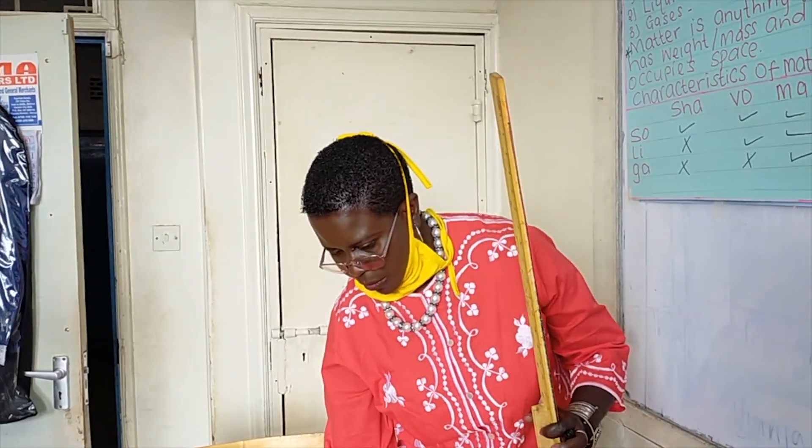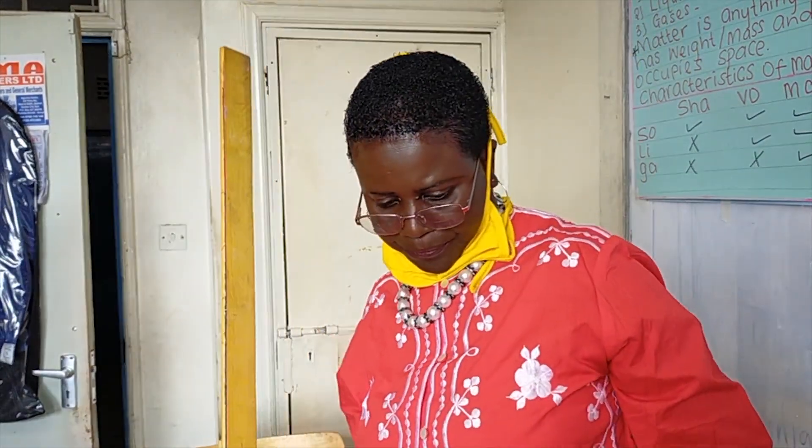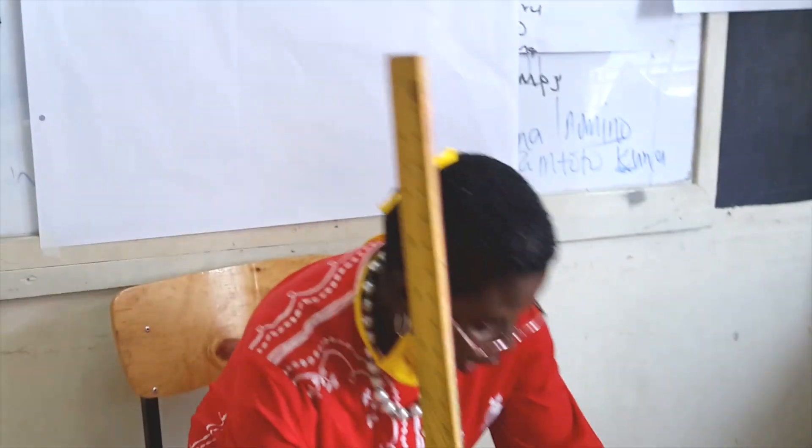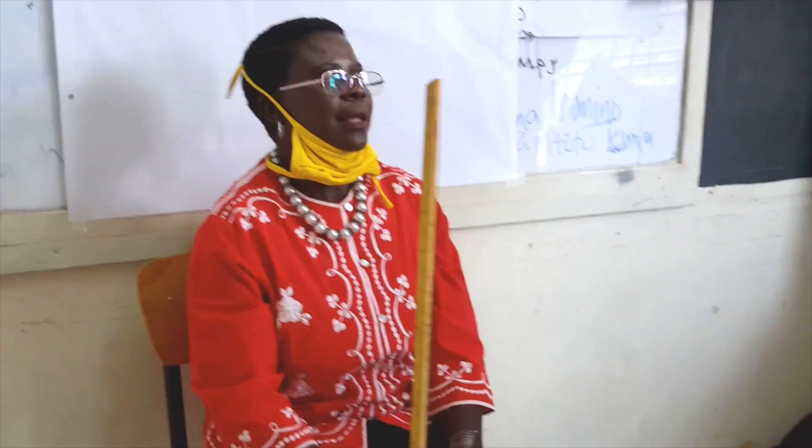If I sit here on this chair, it means that I have occupied space here. So there is no space here. If you want to come and sit here on this chair, you cannot be able to sit because I have already occupied space there.